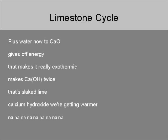Add water now to CaO, gives off energy — that makes it really exothermic. Make Ca(OH)2, that is slaked lime — calcium hydroxide. We're getting warmer.